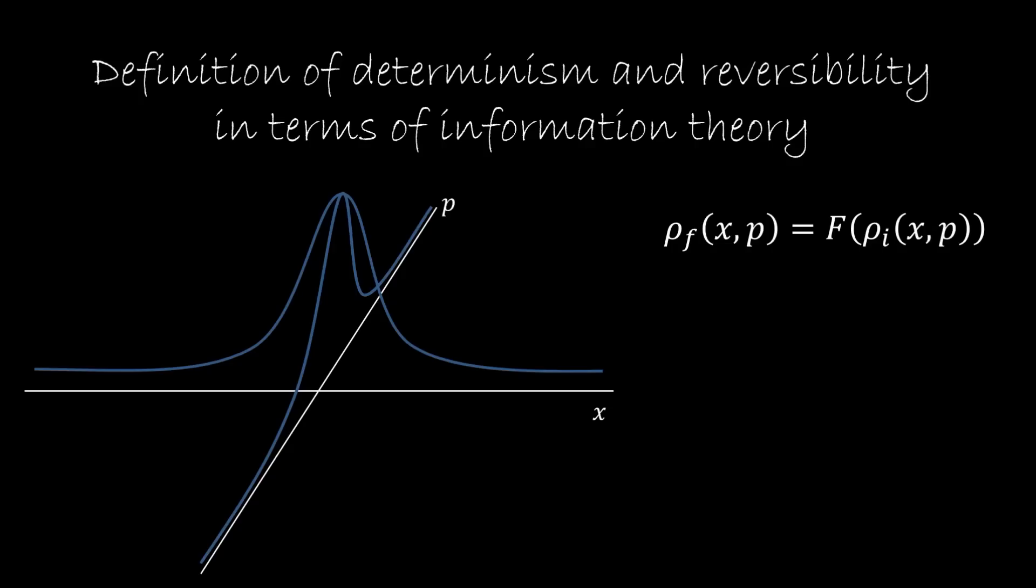In this section we are going to look at Hamiltonian mechanics from the perspective of information theory. Let's assume we have a distribution in phase space, in x and p. If we assume that the system is deterministic and reversible, then it means that the final distribution is going to be a function of the initial distribution.